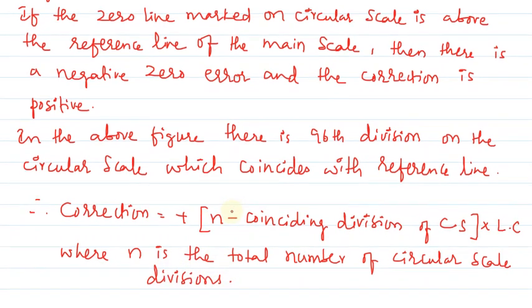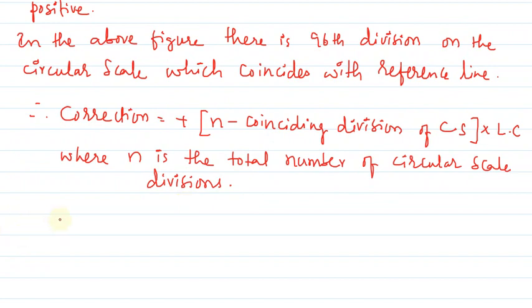Therefore correction equals plus (100 minus 96) into 0.001 centimeters. This equals 4 into 0.001, which is 0.004 centimeters.